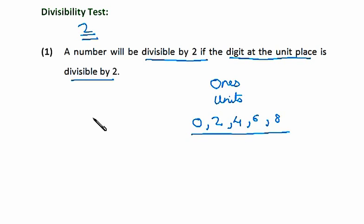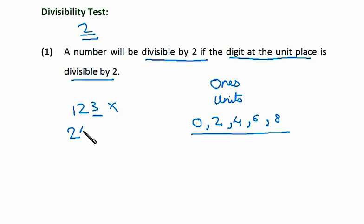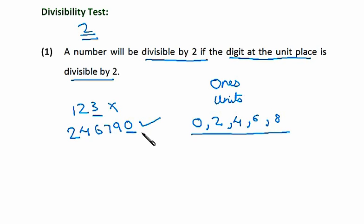We'll take a few examples. Suppose we have 123. Now at the unit's place we have 3, which means that this number is not divisible by 2. But if we have 2,467,90 — we have 0 at the unit's place — which means that this whole number is divisible by 2. No matter how big that number is, all you need to do is check the unit's place. If it is any of these 5 numbers, then the whole number will be divisible by 2, or else it won't be.